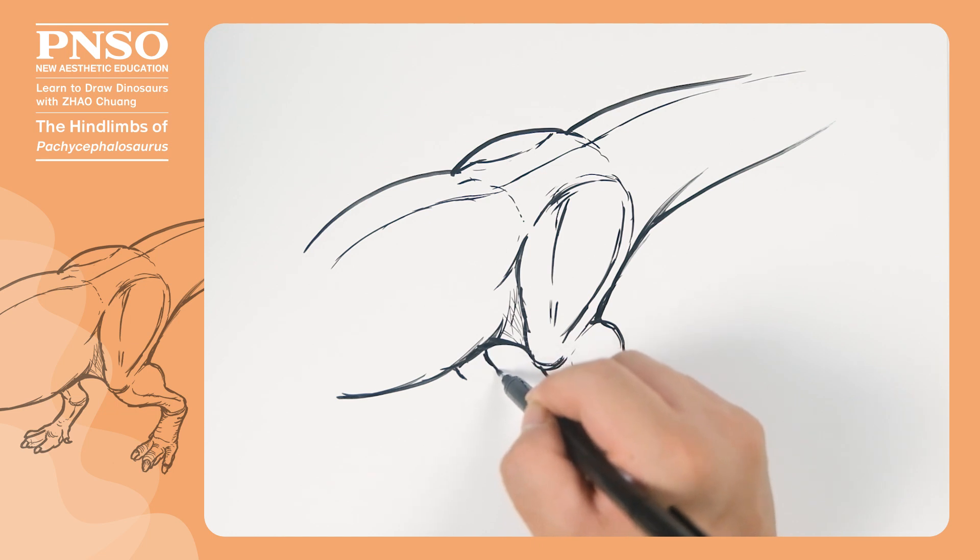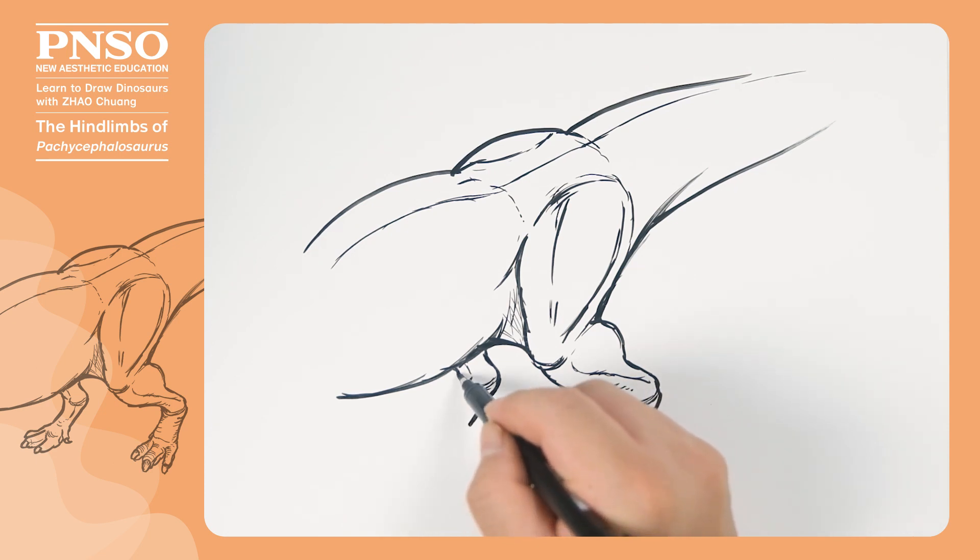Then we draw its other hind limb. Most of this hind limb is blocked by the abdomen, only the part below the ankle is visible. On this foot, we can see its regressed little toe with a sharp toenail.